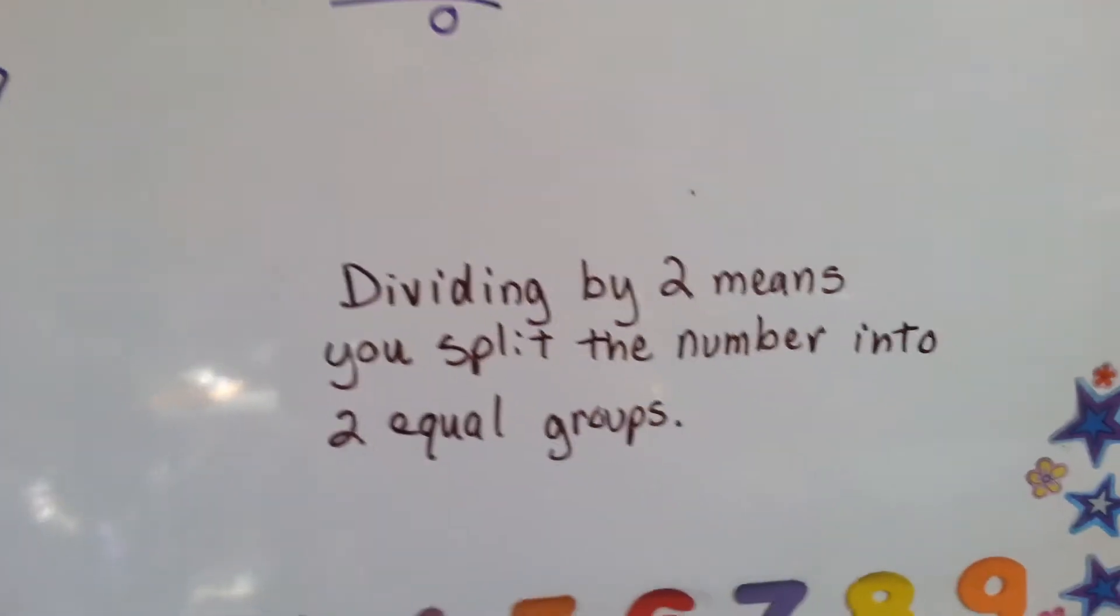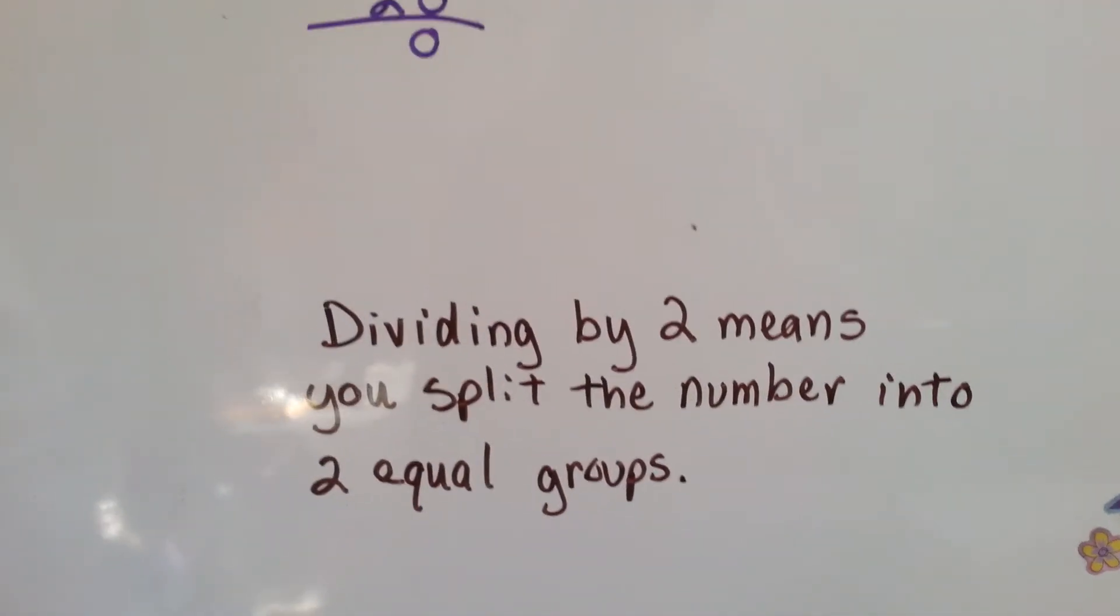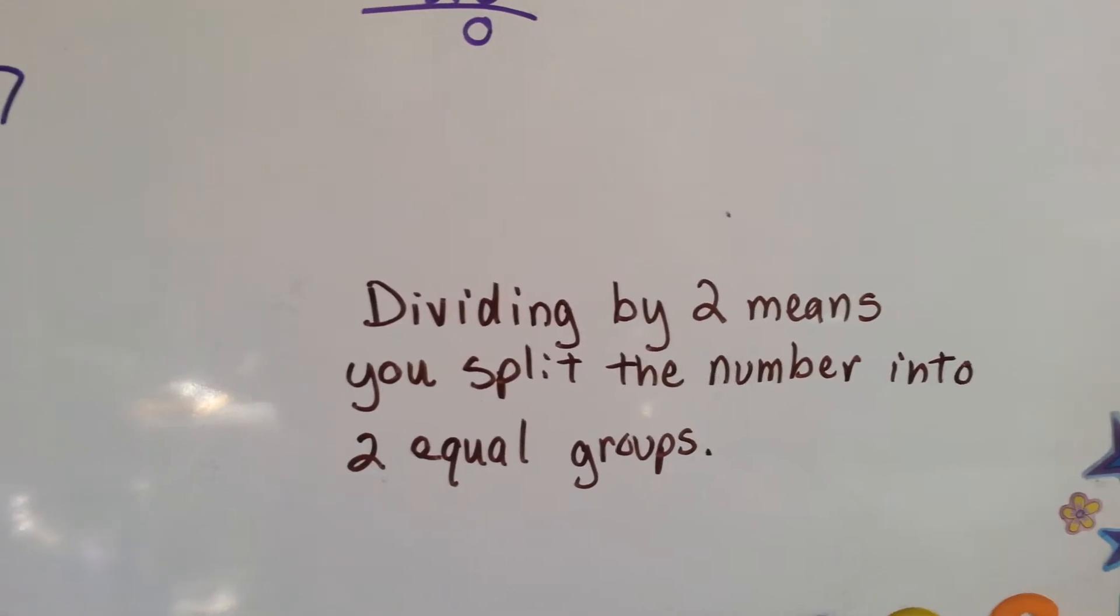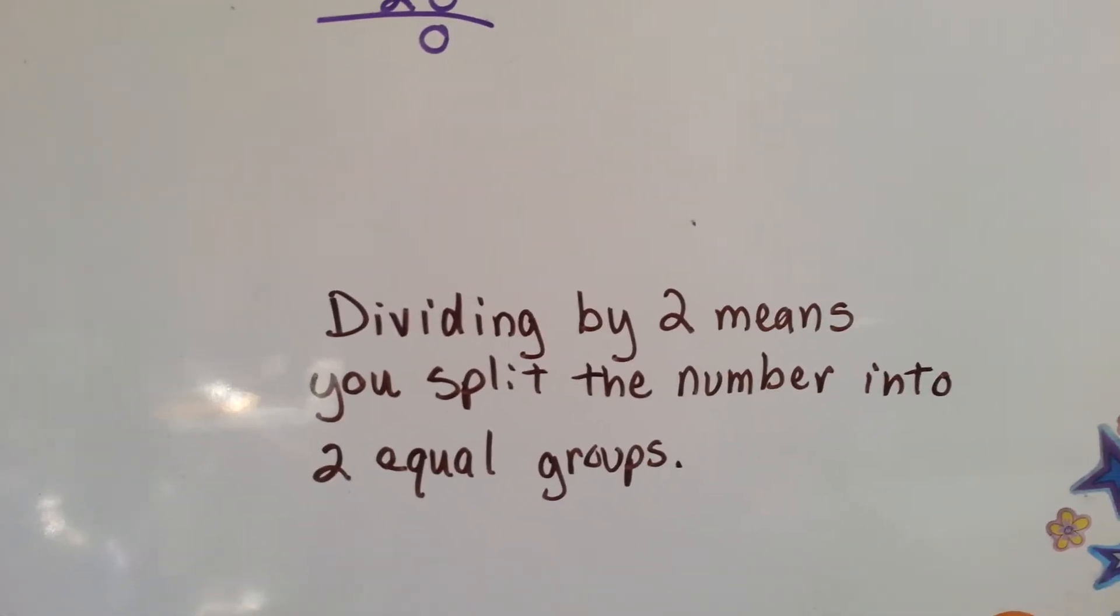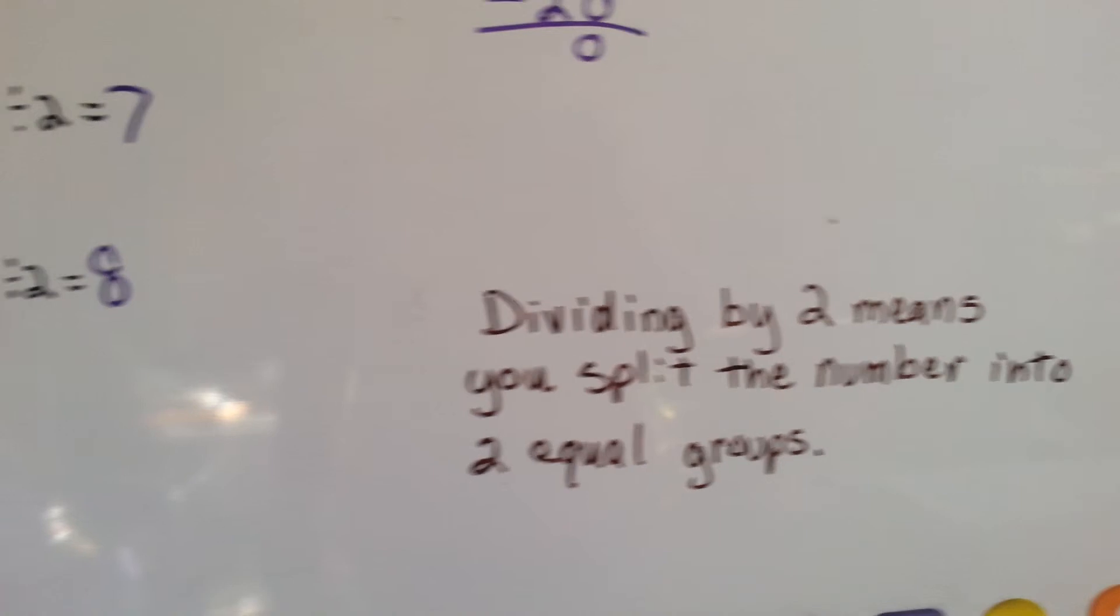So, dividing by 2 means you split the number into 2 equal groups. Or, you have 2 in each group. Okay?